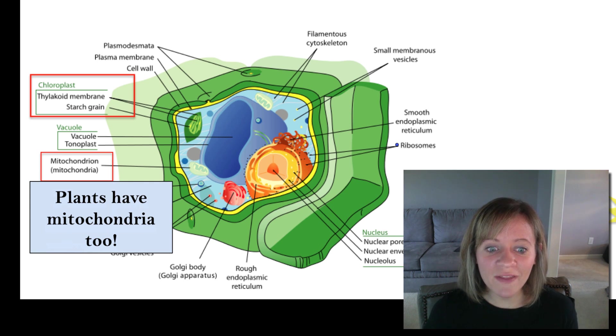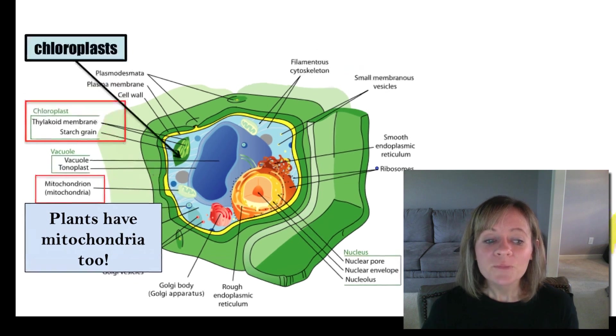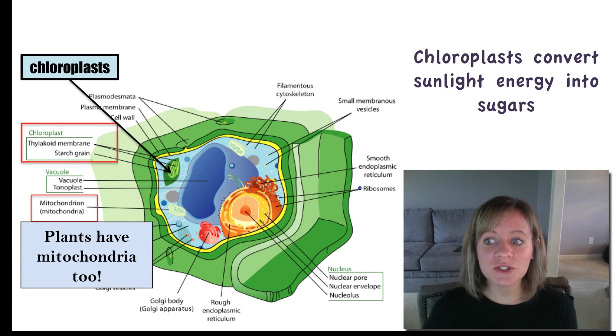So you might be thinking, why do they need mitochondria? They make their own food. They make their own sugar through photosynthesis. Well, the chloroplast is going to convert sunlight energy into sugars through photosynthesis. So you are right.